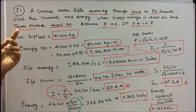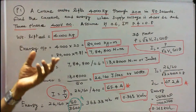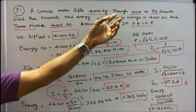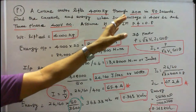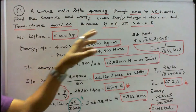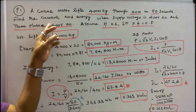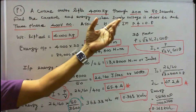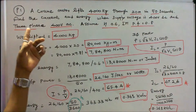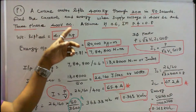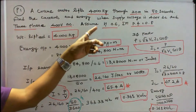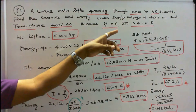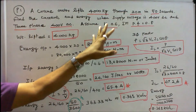Problem 1: A crane motor lifts 4000 kg through 20 meters in 50 seconds. Find the current and energy when supply voltage is 400 V DC and 3-phase 400 V AC. Assume efficiency is equal to 0.6, induction motor power factor is equal to 0.8.